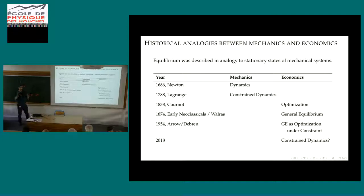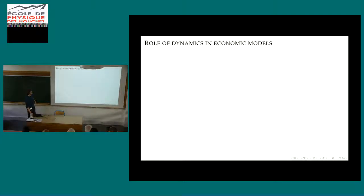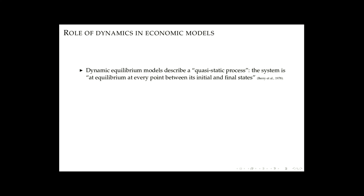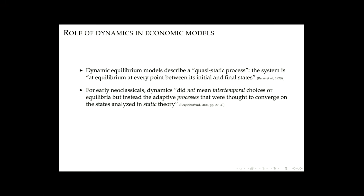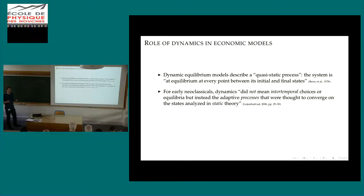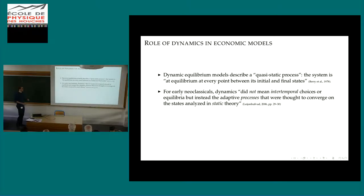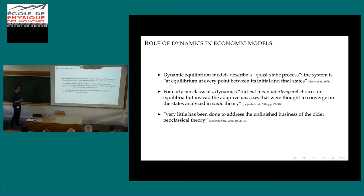Lagrange described constraint dynamics, and we have all these constraints in economics, so how can we make a dynamic model that reflects these ideas? I'm not talking about analogies between thermodynamics and economics, but between Lagrangian mechanics and economics. Dynamic equilibrium models usually describe what a physicist would call a quasi-static process—the system is at equilibrium at every point. But for Pareto, dynamics meant the adaptive process of convergence to a stationary state—and he said he didn't get far with that.